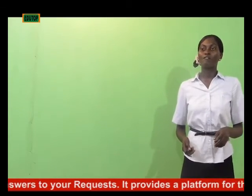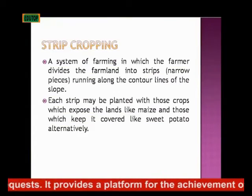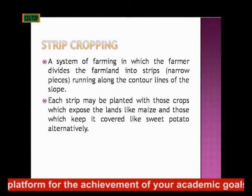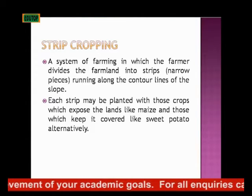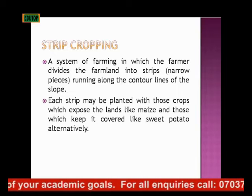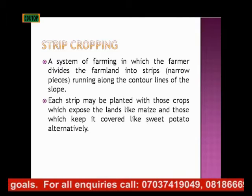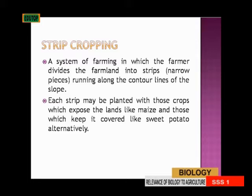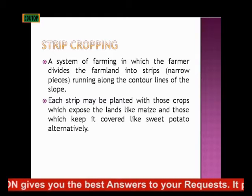The last type of farming I'll be talking about is strip cropping. In this type of farming, the farmer divides the land into strips — that is, into narrow pieces running along the contour lines of the slope. It is done around sloping ground. Then each strip is planted with crops that expose the land, like maize.